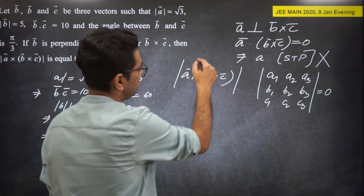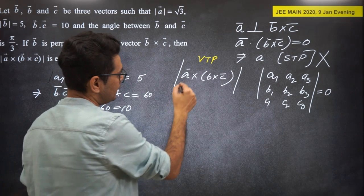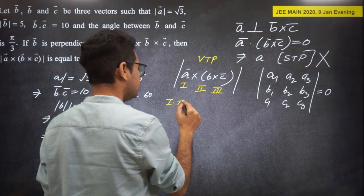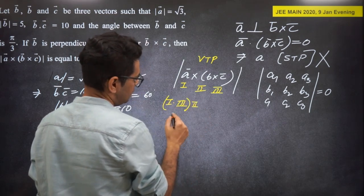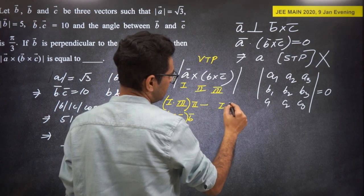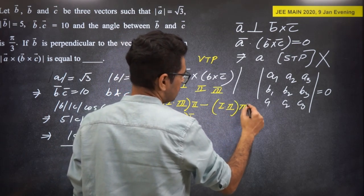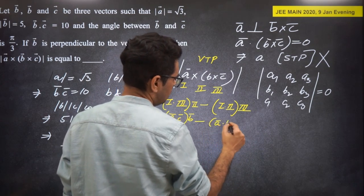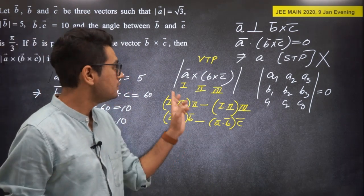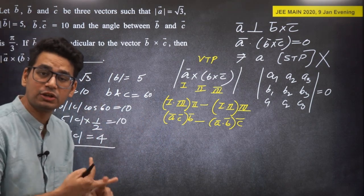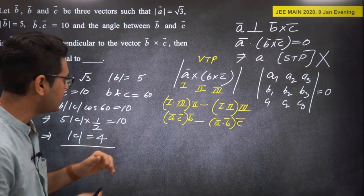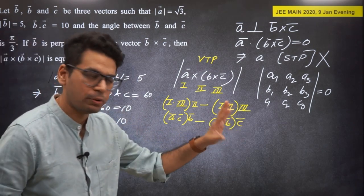VTP formula: A × (B × C) = (A·C)*B - (A·B)*C. However, we don't have the angles between A and B or A and C. So using VTP directly is difficult — we don't have the individual components.